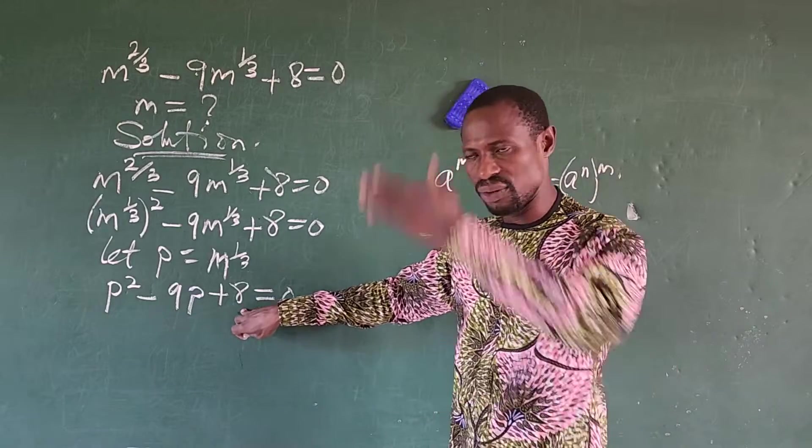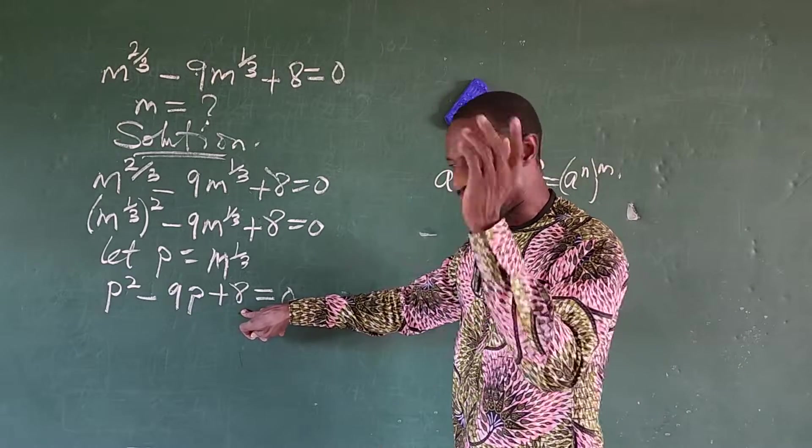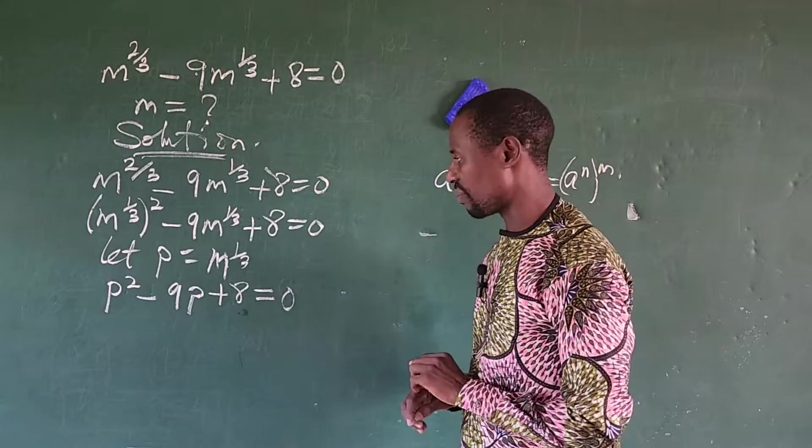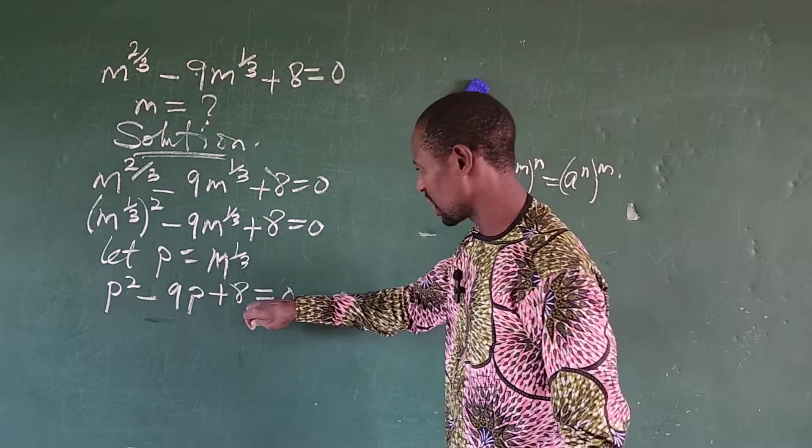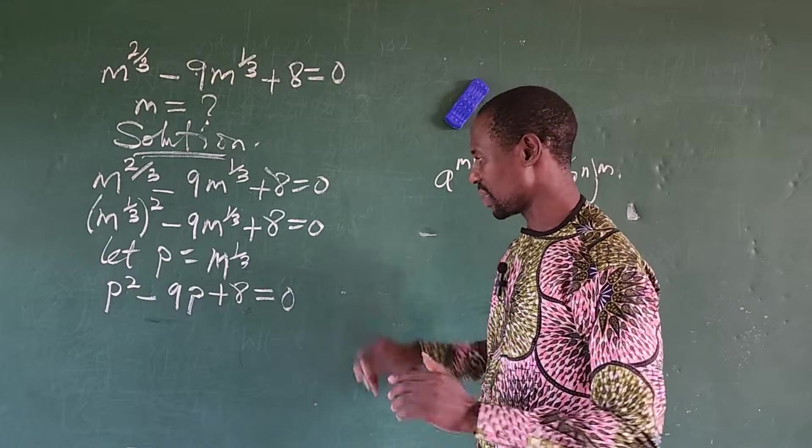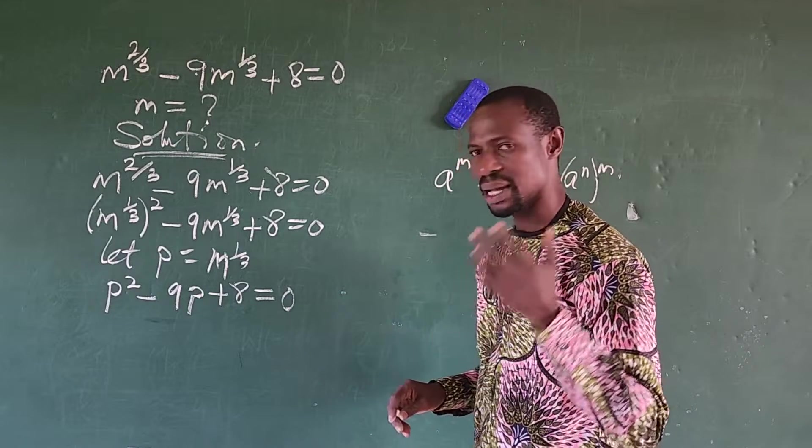So we now have here p squared minus 9p plus 8 equals 0. Now this is a quadratic equation, so we can solve quadratically now. Very easy. Bring out 8 and look for the factors of 8.